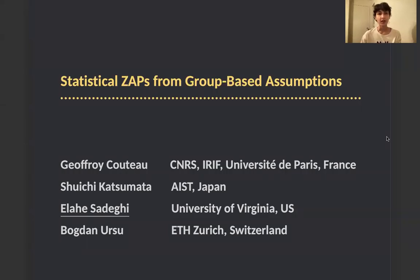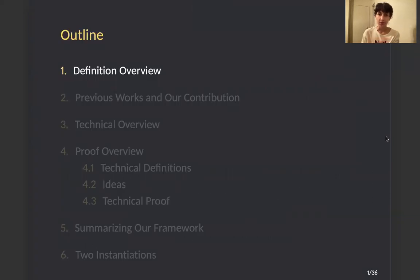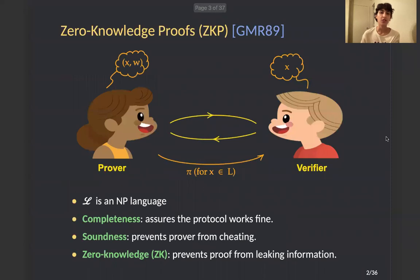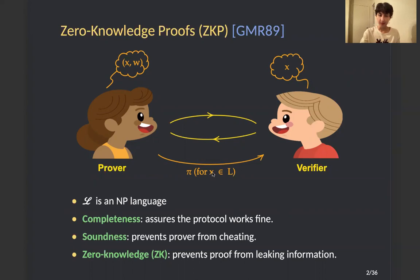Hello, everybody. Welcome to my talk about statistical ZAPs from group-based assumptions. My name is Elahe, and this is joint work with Jafar Kuto, Shriichi Katsumata, and Bogdan Ersu. I want to start with the definition of zero-knowledge protocols. A zero-knowledge protocol is a protocol between a prover and a verifier in which the prover wants to prove that some statement x is in some certain language L to the verifier after some interactions.